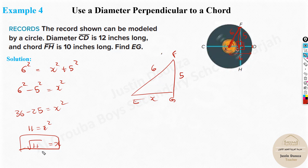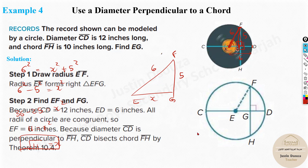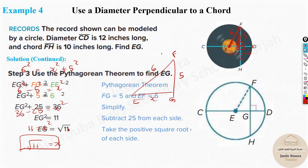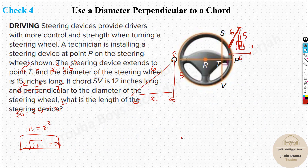You can see the answer is √11 — that is the correct answer. You can type this into a calculator to confirm: √11 ≈ 3.32 inches.